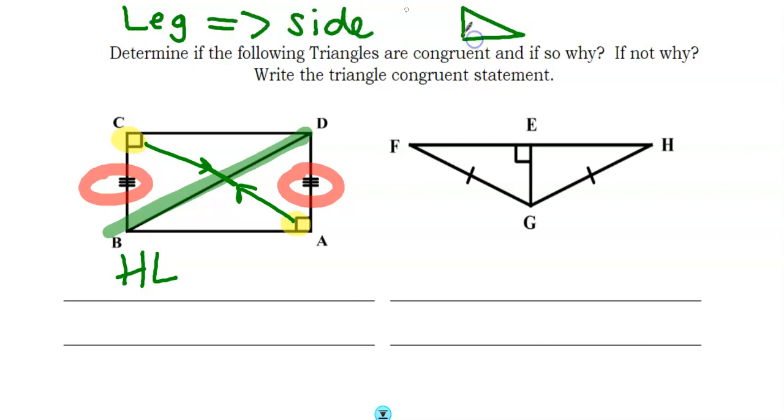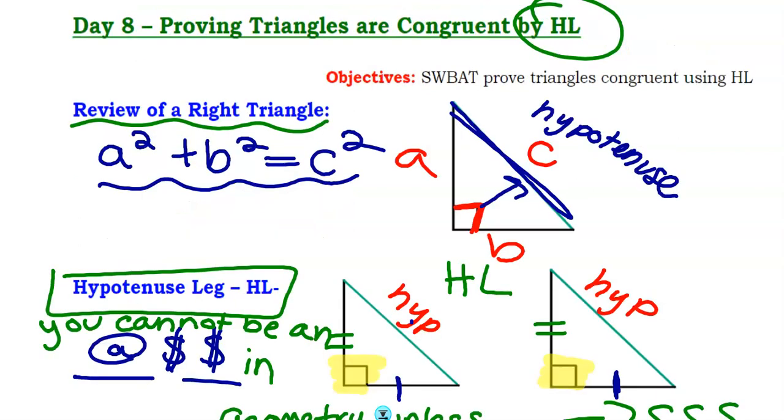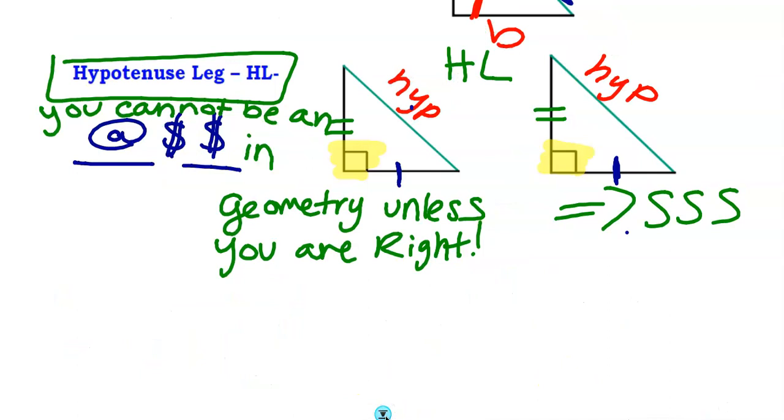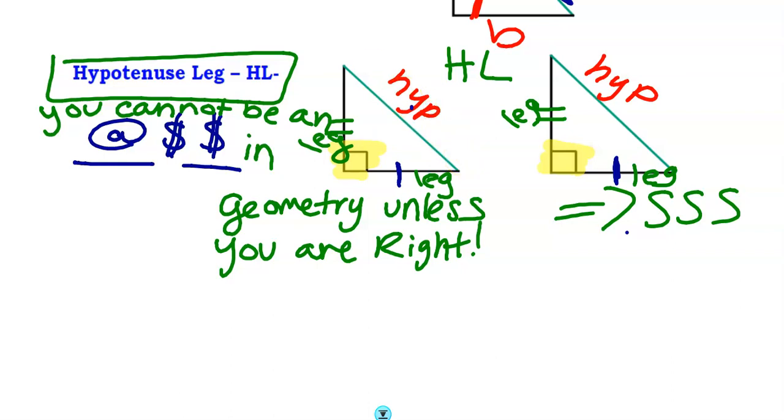Leg is a fancy word of saying a side. Sometimes we talk about the legs of a triangle. So these are the legs and the hypotenuse is on the top. If you want to, you guys can write that on your notes also. I apologize. I didn't write it sooner.